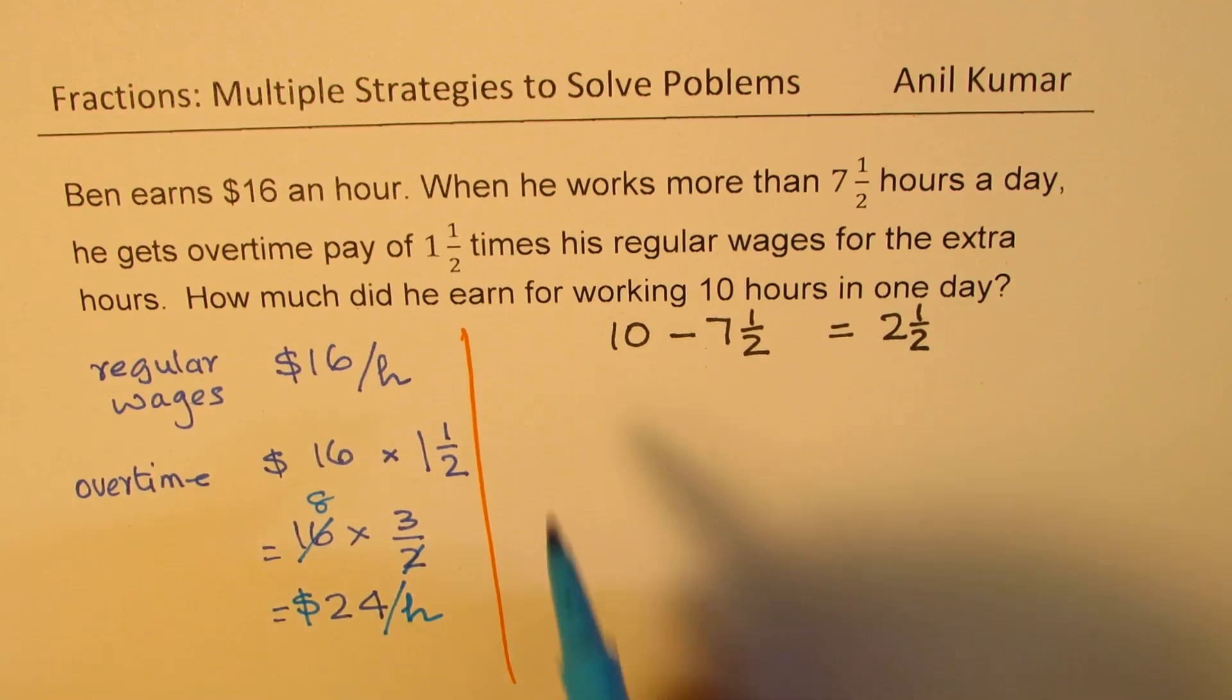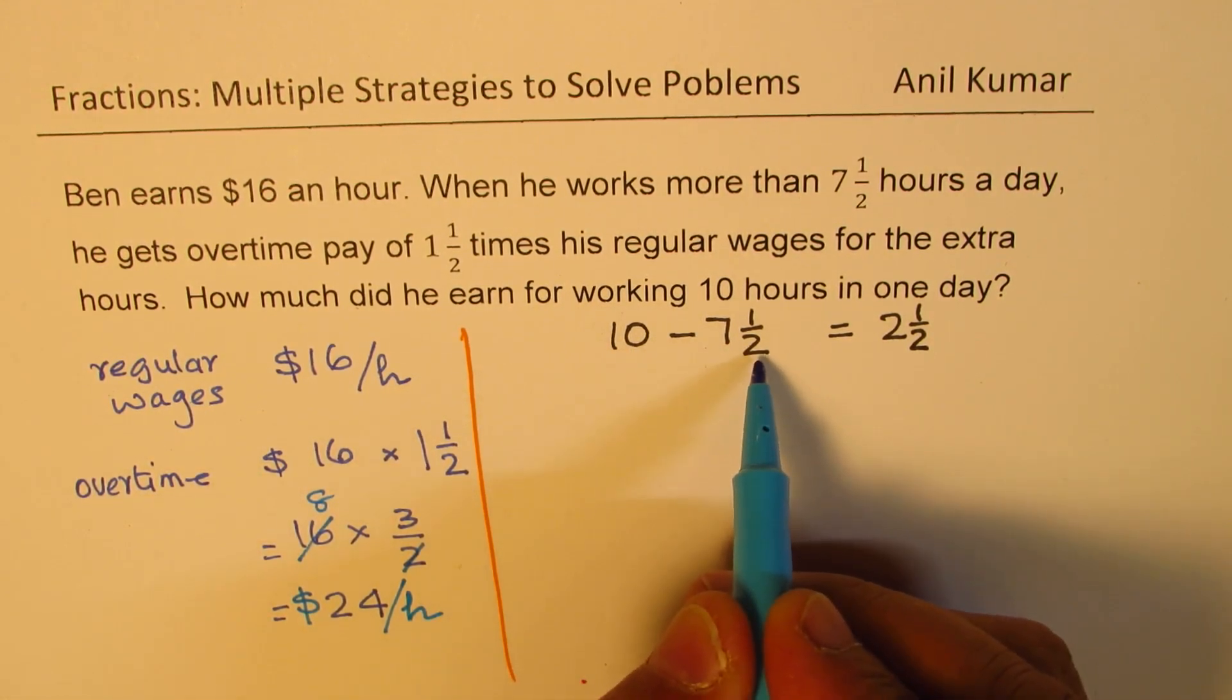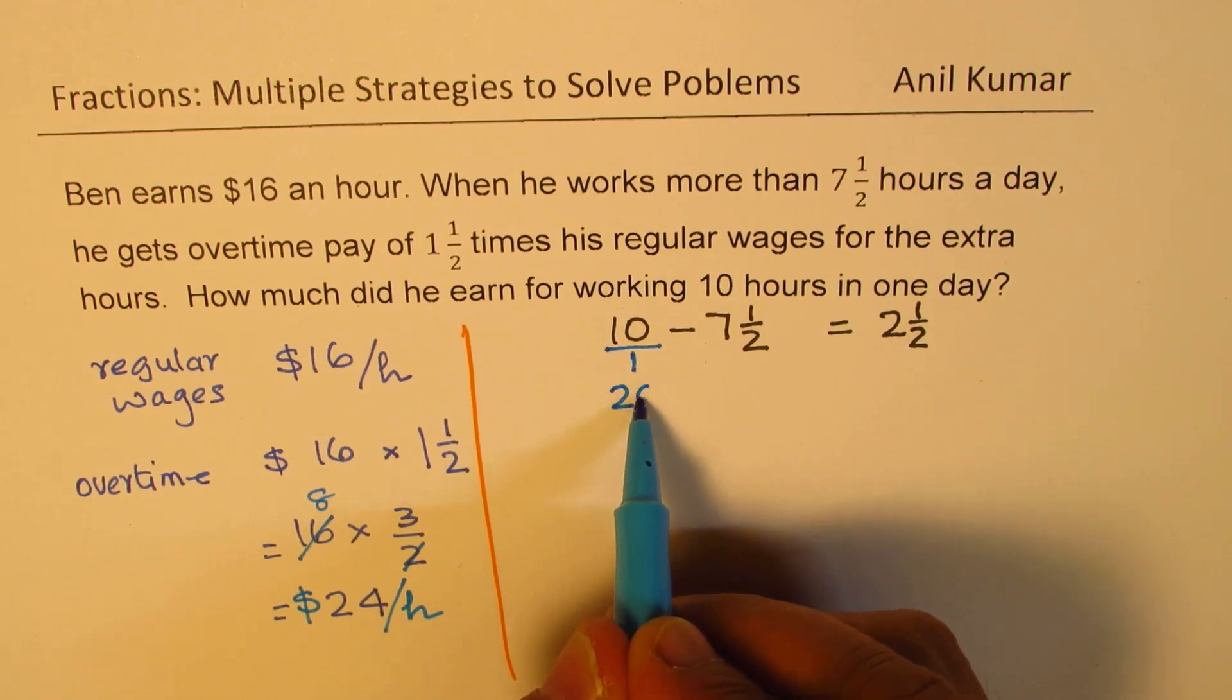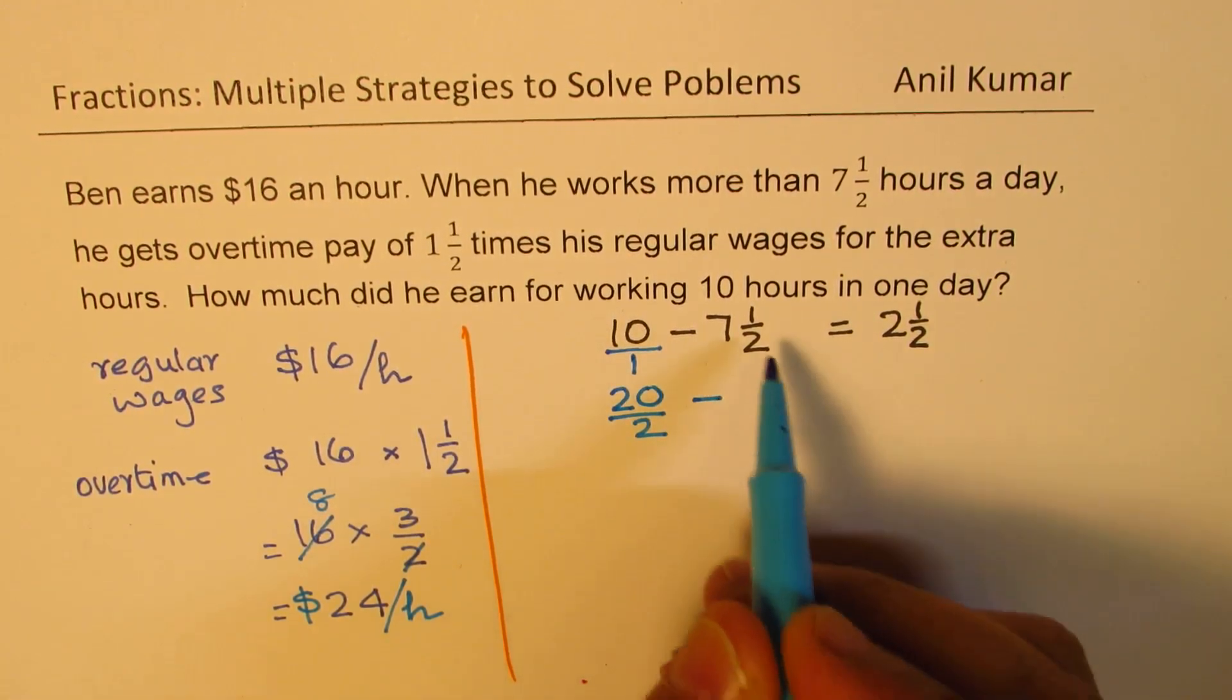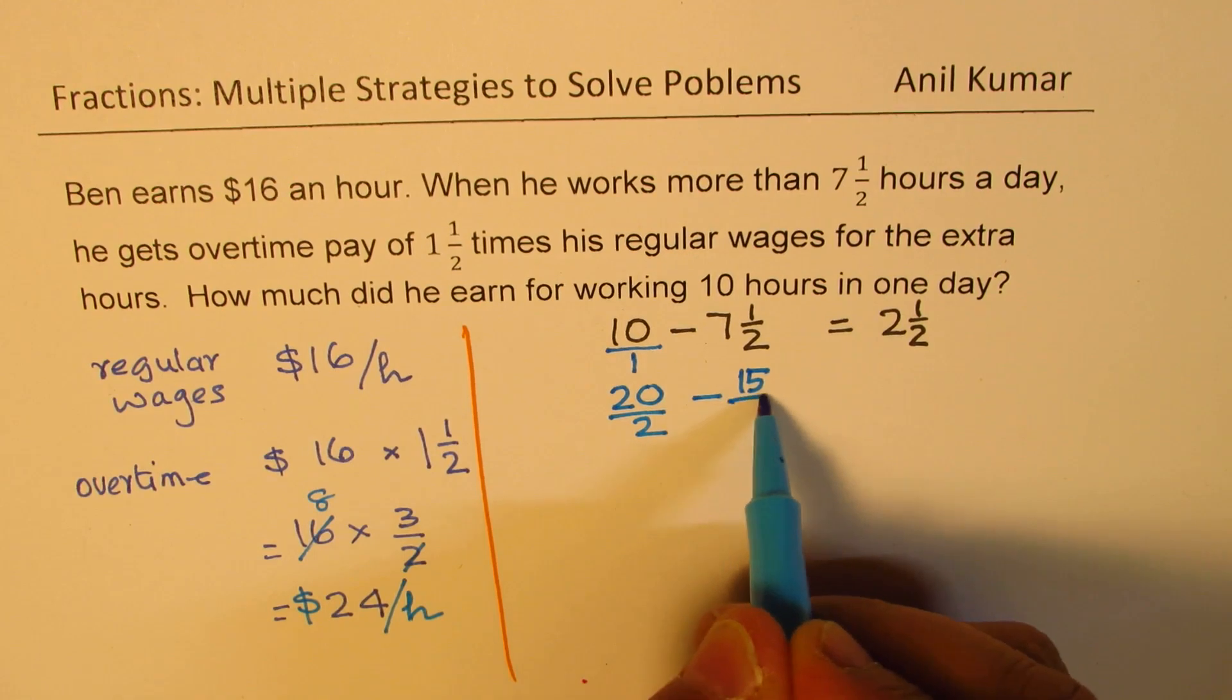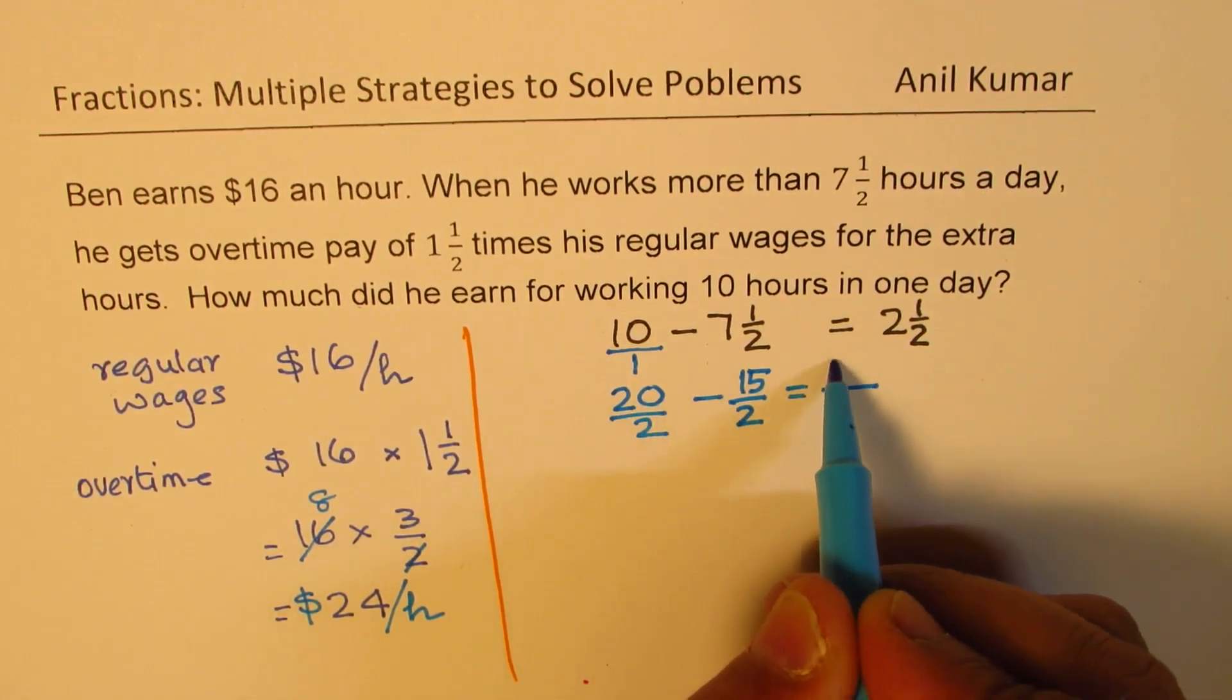Now here is an alternate method. We can write, we have to get denominator of 2. And this is denominator of 1. So what we could do here is multiply by 2. So we get 20 over 2, which is 10. And here, 7 times 2 is 14 and 1 is 15. So 15 over 2. And that gives you 20 minus 15 is 5.